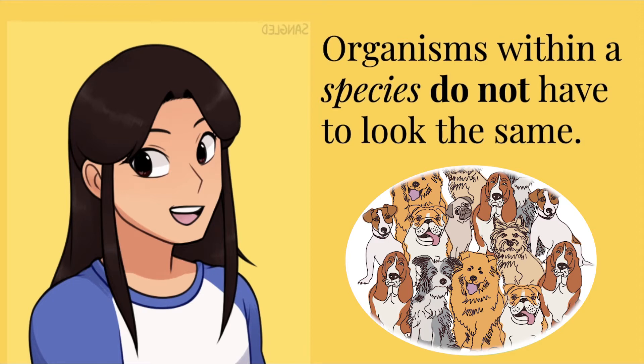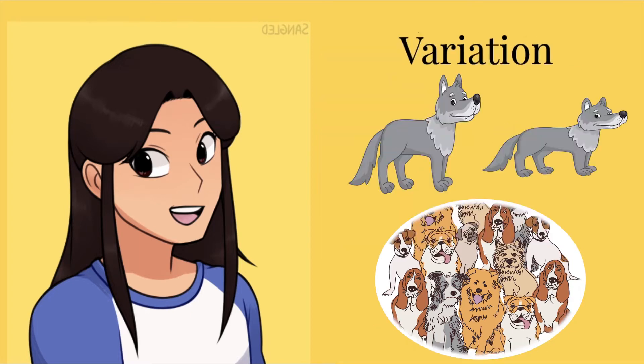Take dogs, for example. There are so many different breeds of dogs and they can all look so different. However, they all still belong to the same species no matter the breed. The condition that organisms within the same species have various traits that make them different from one another is called variation.